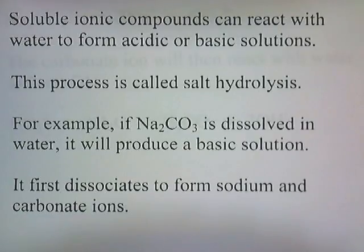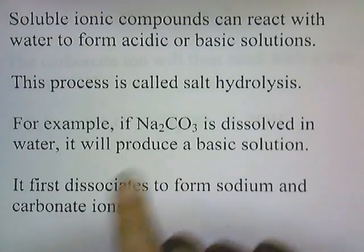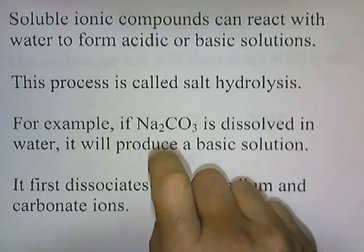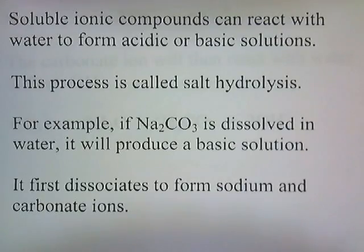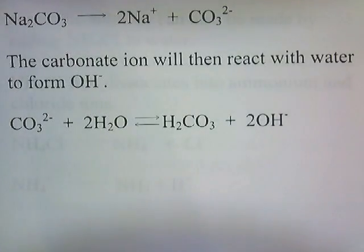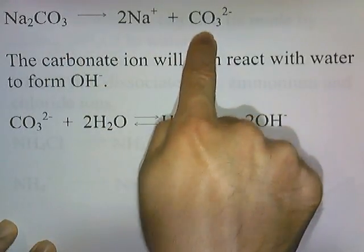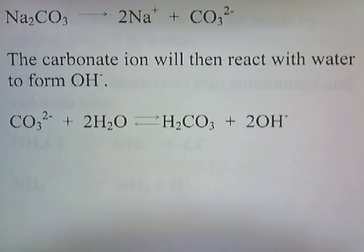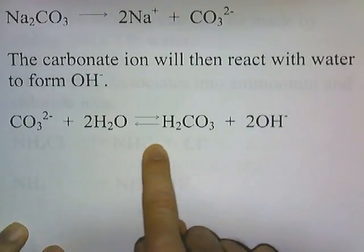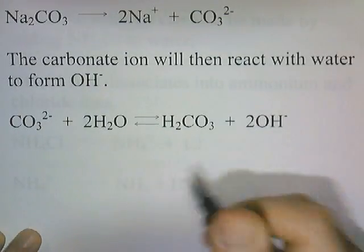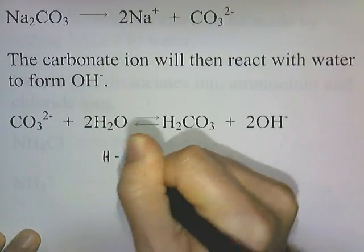Soluble ionic compounds can react with water to form acidic or basic solutions, and this process is called salt hydrolysis. For example, if Na2CO3 is dissolved in water, it will produce a basic solution — and notice that you don't see any OH in Na2CO3, yet when you put it in water, it creates hydroxide. It first dissociates to form sodium and carbonate ions. The carbonate ion then reacts with water to form hydroxide, essentially stealing a hydrogen off of each water molecule.